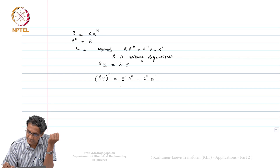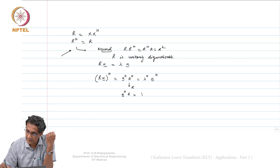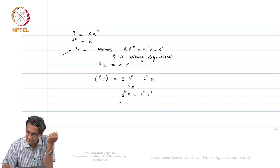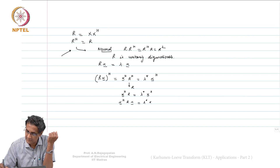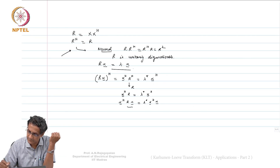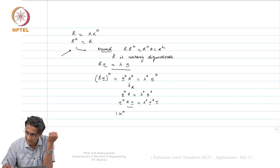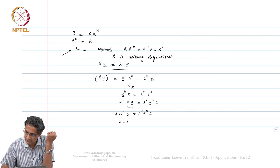Since R Hermitian equals R, we get X Hermitian R equals lambda star X Hermitian. Now multiply on the right by X: this gives lambda star times X Hermitian X. But R X equals lambda X, so X Hermitian lambda X equals lambda star X Hermitian X, which means lambda minus lambda star times X Hermitian X equals 0.